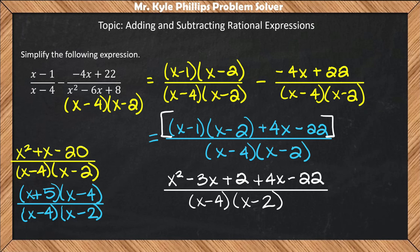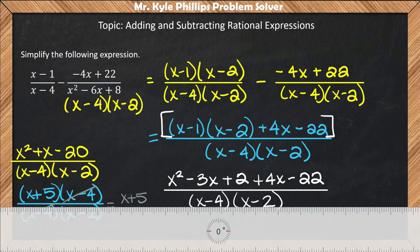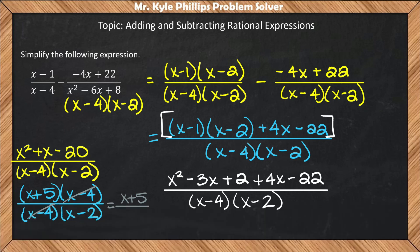Now, I can cross out my like binomials. And the solution to this problem will be x plus 5 all over x minus 2.